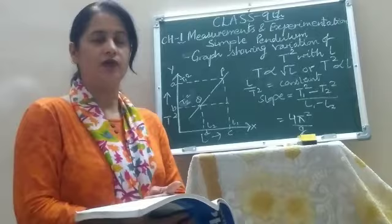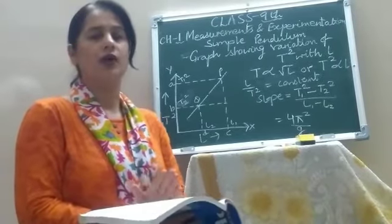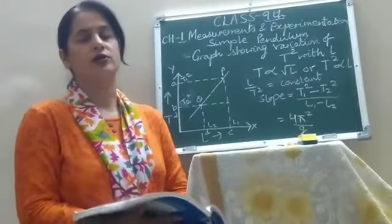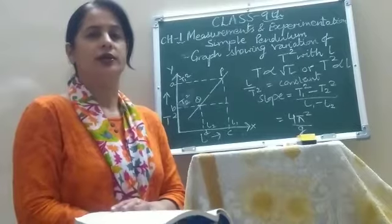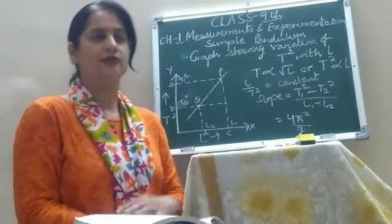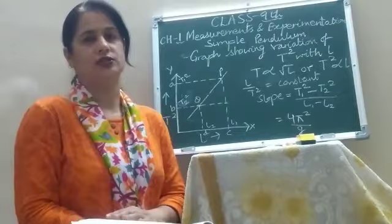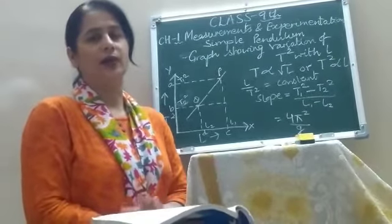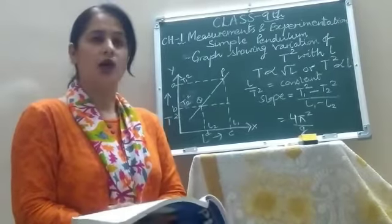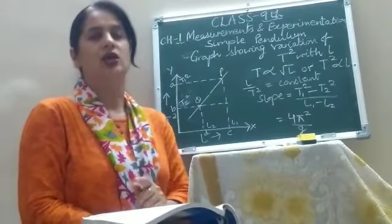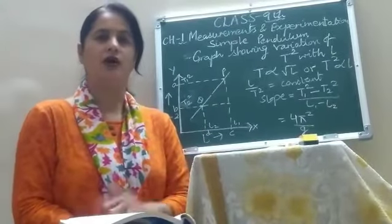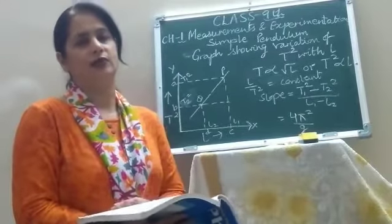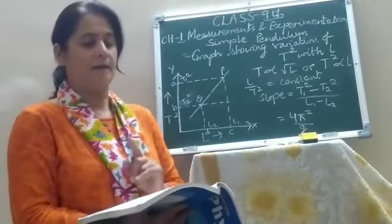What do you mean by the time period of the simple pendulum? The time taken for one oscillation. But it is very difficult to note it down because it is a very small quantity. So it is better to calculate the time taken for more oscillations. Suppose you note down the time t for 20 complete oscillations. You can divide t by 20, and this will give you the time period for one oscillation.